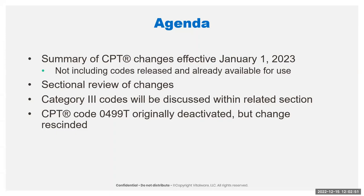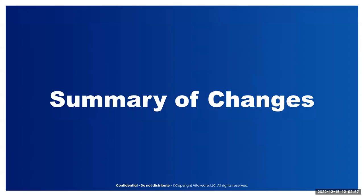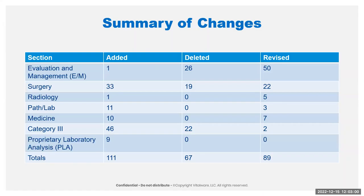I do have a link to that document in my references. One of the questions we get quite often is why don't your totals for the changes equal what is published by the AMA? What we do is we are looking only at those changes that are new for 2023. When CPT publishes their changes, they are counting anything that was not in the 2022 book that is now published in the 2023 book, so their counts are inflated over what we have.